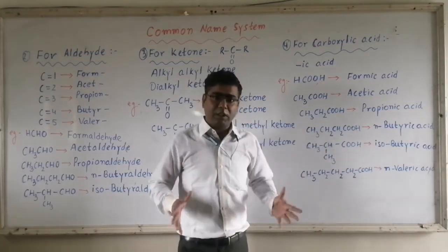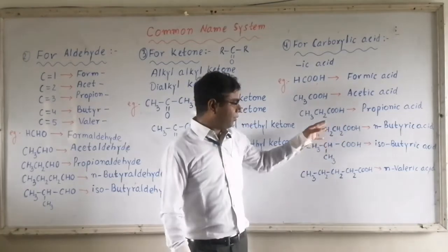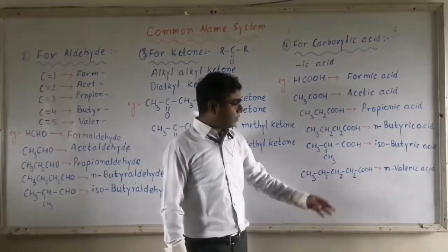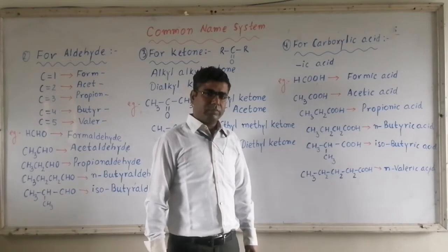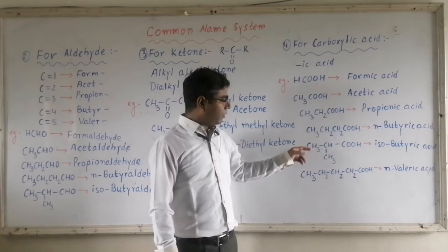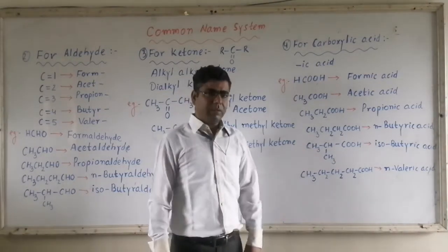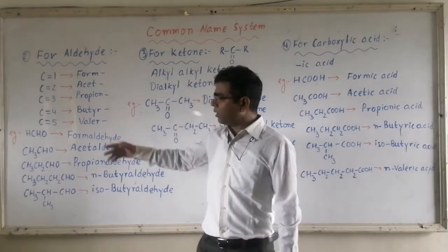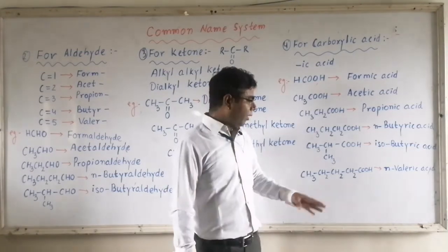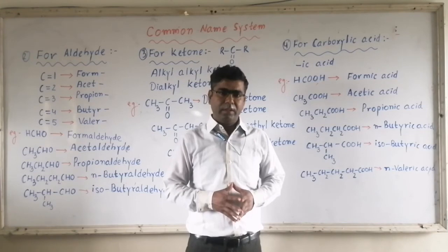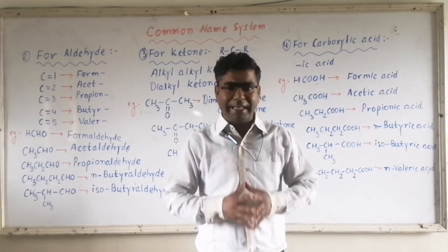Since we have four carbon atoms, branching is possible. But here there is no branching — it is a straight chain — so it will be named 'normal butyric acid.' Just create a branching by adding an iso group, and it becomes 'isobutyric acid.' Remember, if the second-to-last carbon atom has two methyl groups, then that unit is called an iso unit, so the compound is 'isobutyric acid.' Now increasing the number of carbon atoms to 5: for 5 we use 'valer,' so CH3CH2CH2CH2COOH — a straight chain with 5 carbons and a carboxylic acid group — will be named 'normal valeric acid.' In this manner, we assign common names to aldehydes, ketones, and carboxylic acids. Thank you.